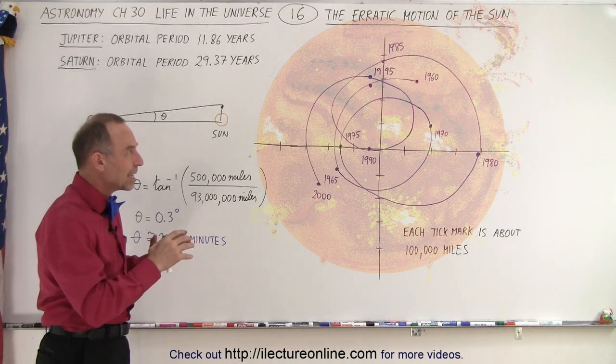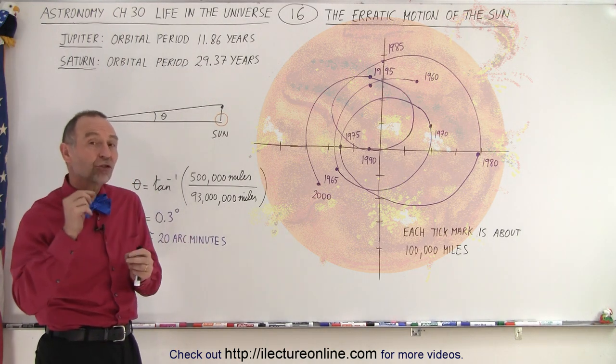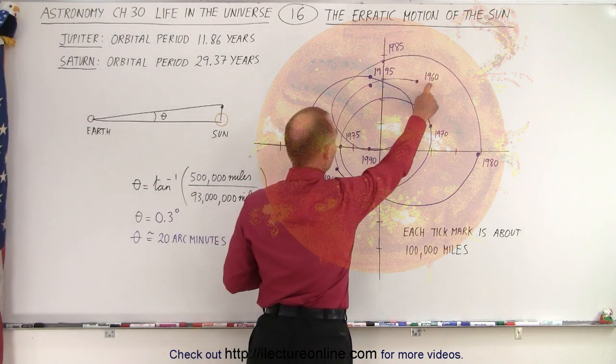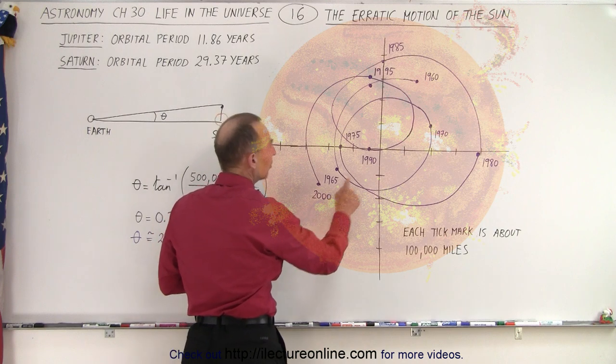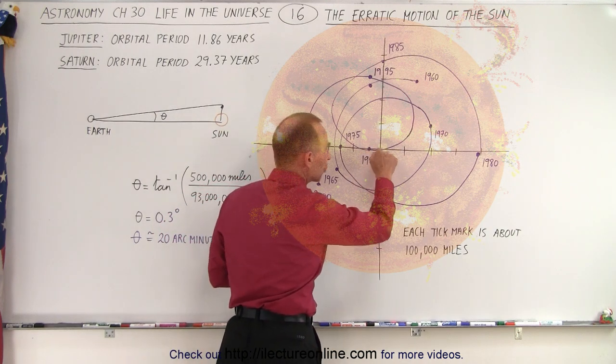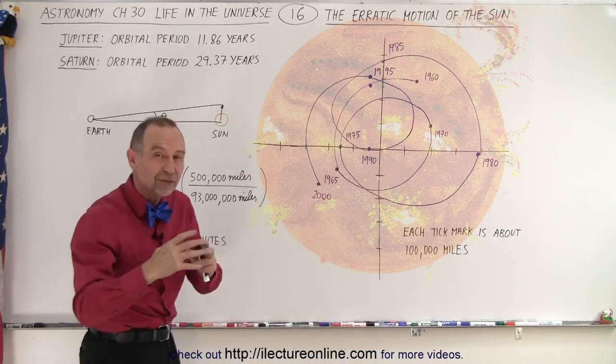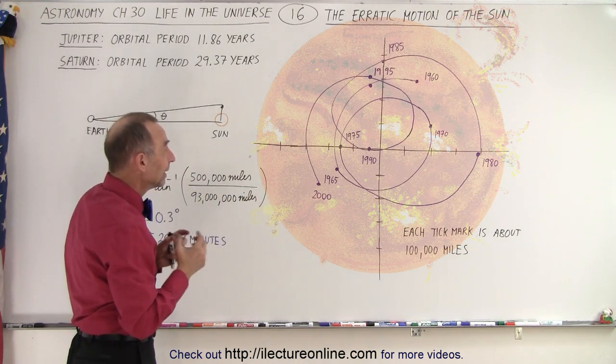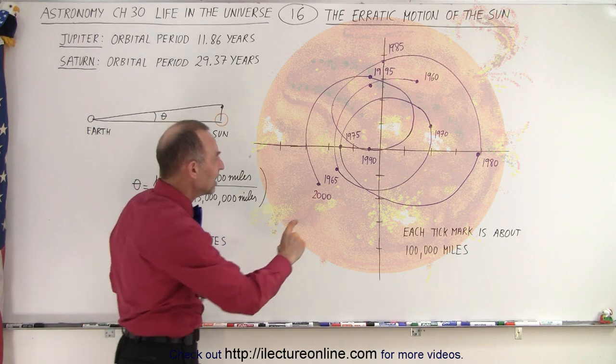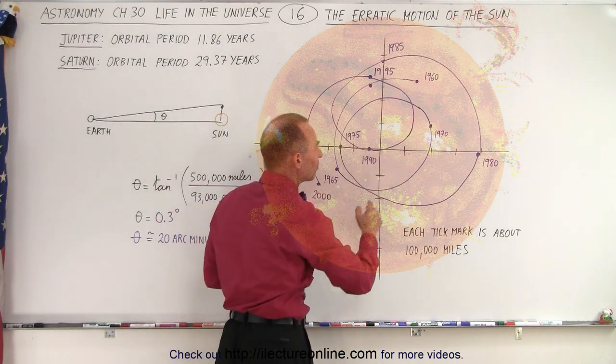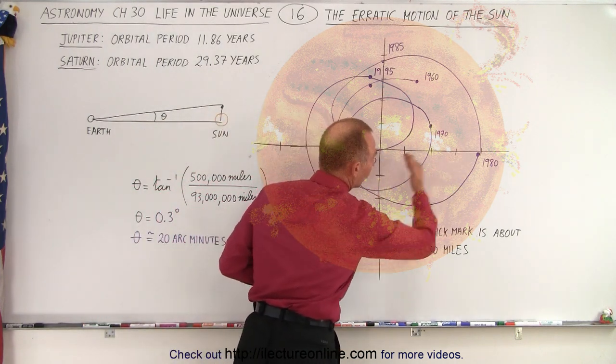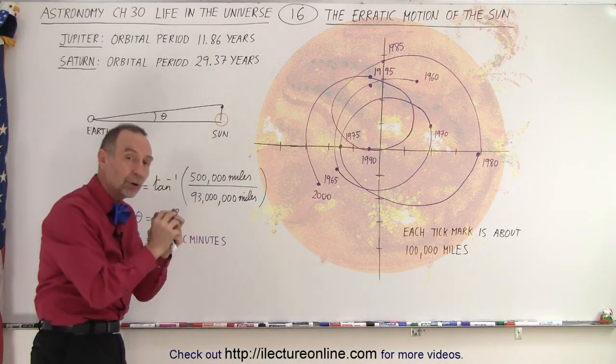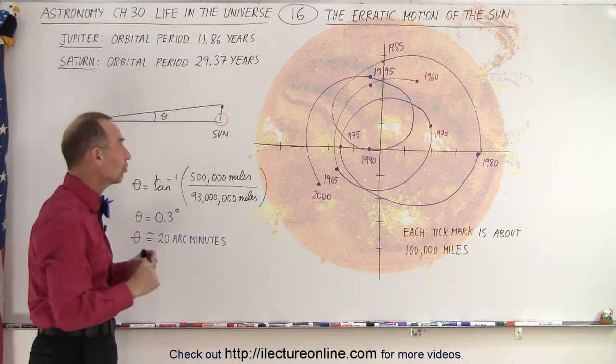Here if we take a look at the location of where our sun is at any point in time in the year, starting from 1960 to the year 2000, if this point where the two lines cross is where the sun would be if it was not affected by the gravitational attraction of all the planets around them, then you can see how they move around. Each tick mark is about 100,000 miles. So sometimes the sun is like 400,000 miles or farther away from the location where it would be if there was no gravitational interaction.